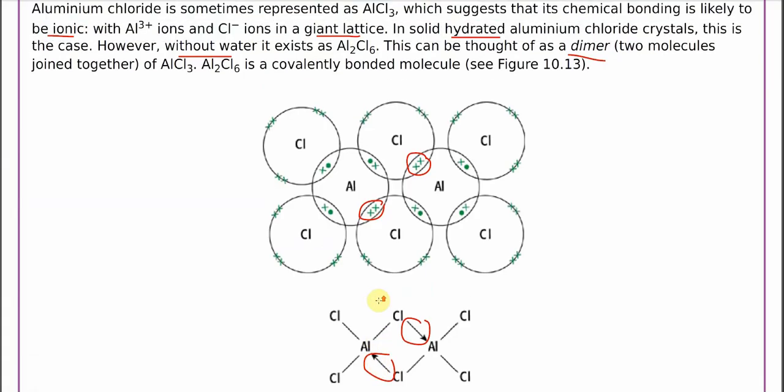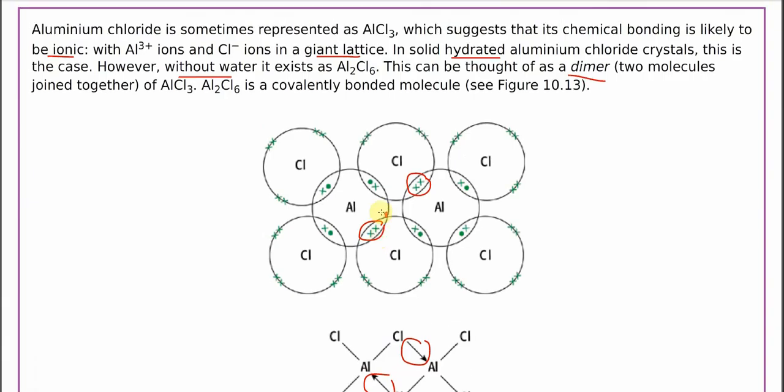Again, without water, especially the water of crystallization, Al2Cl6 will be the molecules that can represent the aluminum chloride. This is from the textbook.